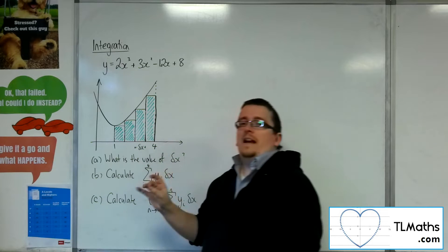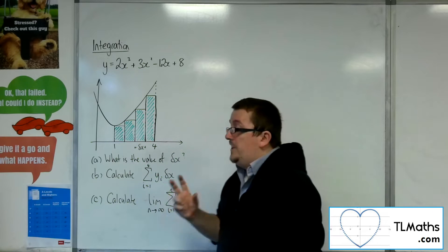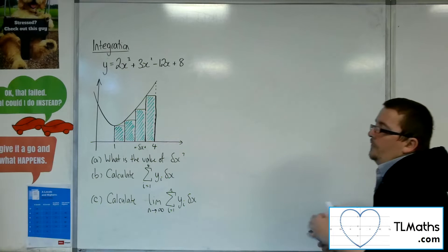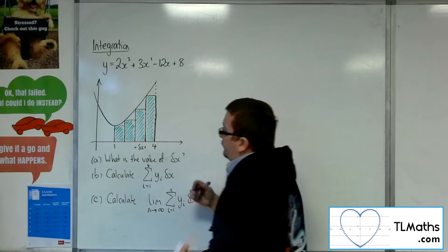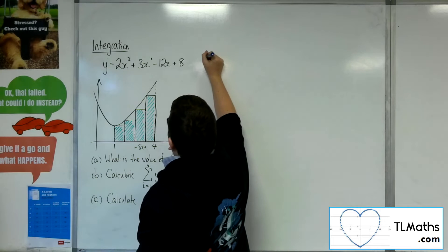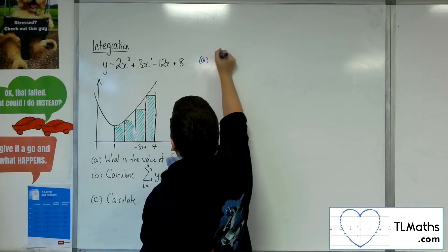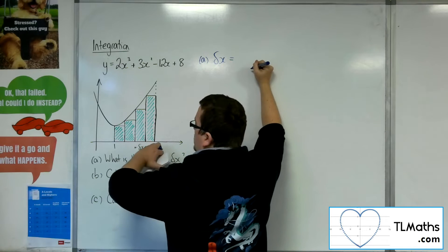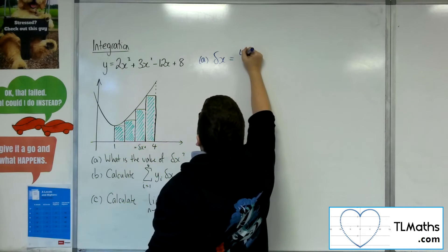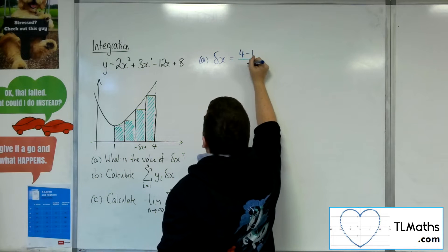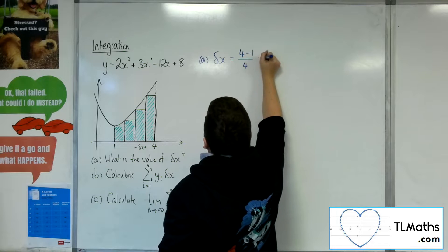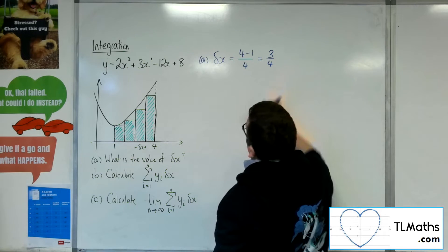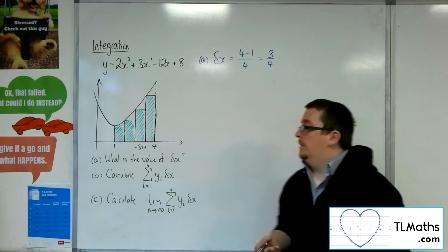Each of them has exactly the same width, delta x. The first question asks: what is the value of delta x? Delta x will be the difference between 4 and 1 divided by the number of bars that I have. So delta x is 3 quarters, or 0.75.